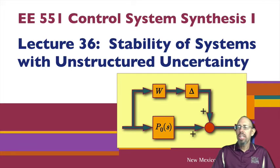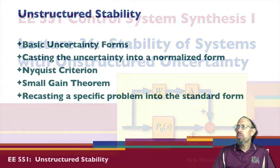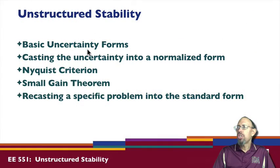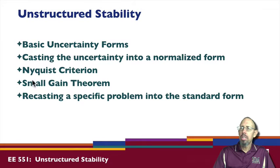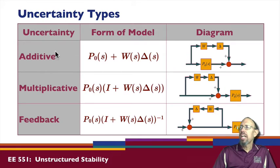In this lecture we're going to talk about stability of systems with unstructured uncertainty. We have already looked a little bit at basic uncertainty forms. We're going to talk now about casting the uncertainty into a normalized form and look at the Nyquist criteria and the small gain theorem — these are things we've looked at — as part of unstructured stability analysis.